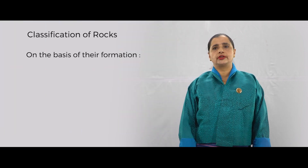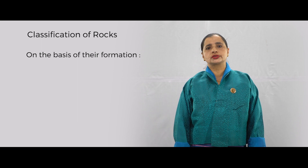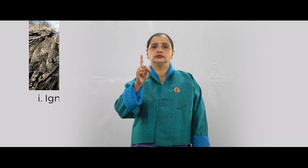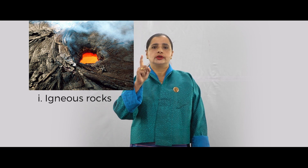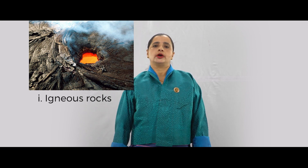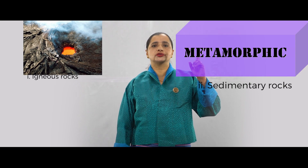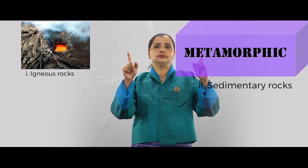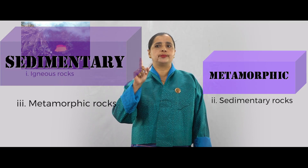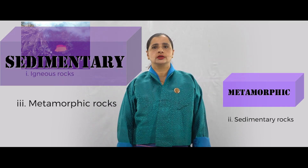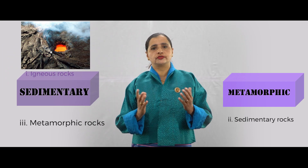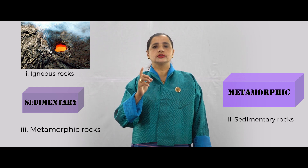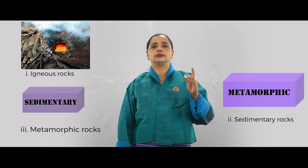On the basis of their formation, rocks are classified into three types. Number one, igneous rocks — look at the picture. Number two, sedimentary rocks — do you see the layers on this picture? The third one is metamorphic rocks. So on the basis of formation, rocks are of three types: igneous, sedimentary, and metamorphic rocks.